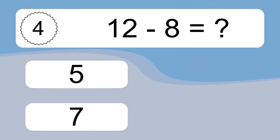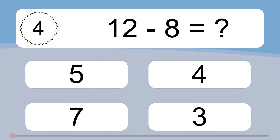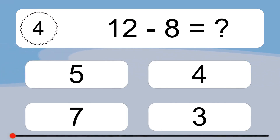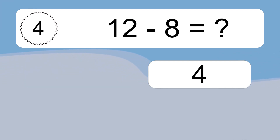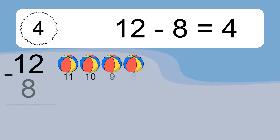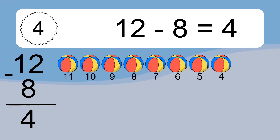12 minus 8 equals what? 12 minus 8 equals 4. Let's count it: 11, 10, 9, 8, 7, 6, 5, 4.